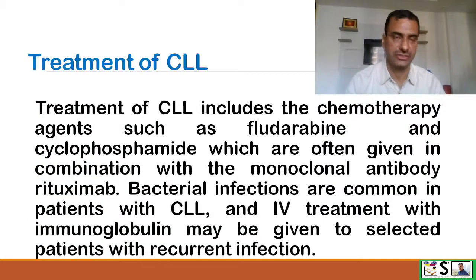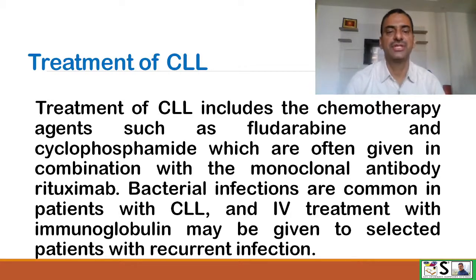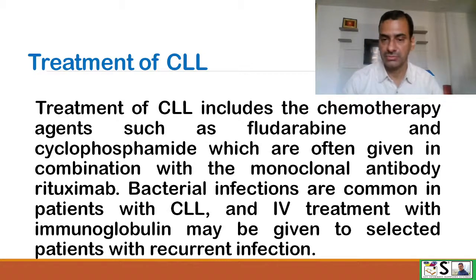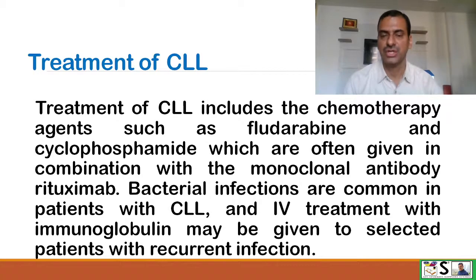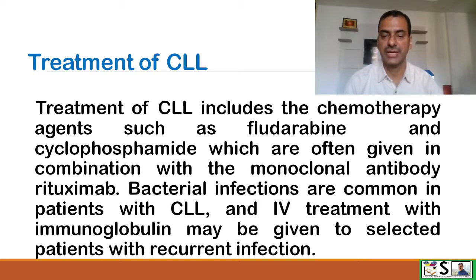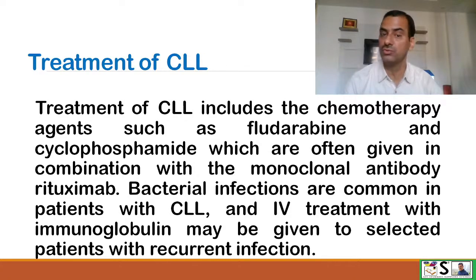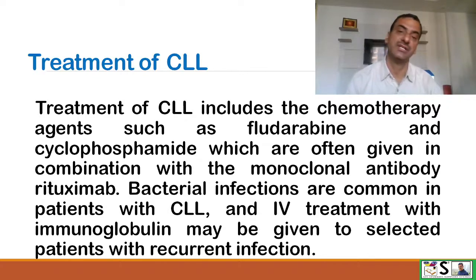Lymphadenopathy means lymphoid tissues are swollen. Treatment of CLL includes chemotherapeutic agents such as fludarabine and cyclophosphamide, often given in combination with the monoclonal antibody rituximab. Bacterial infections are common in CLL patients, so IV immunoglobulin therapy may be given to selected patients with recurrent infections.